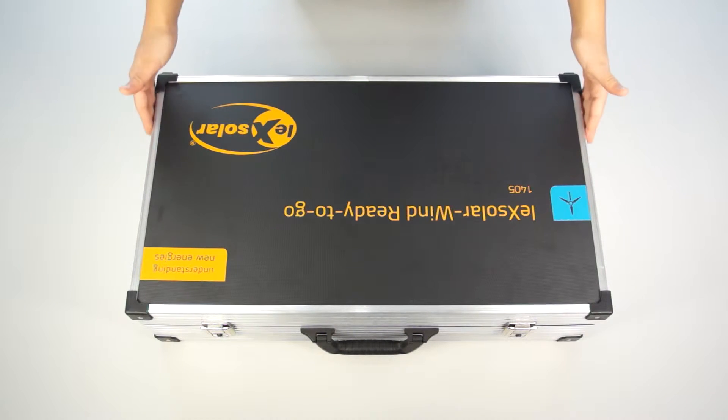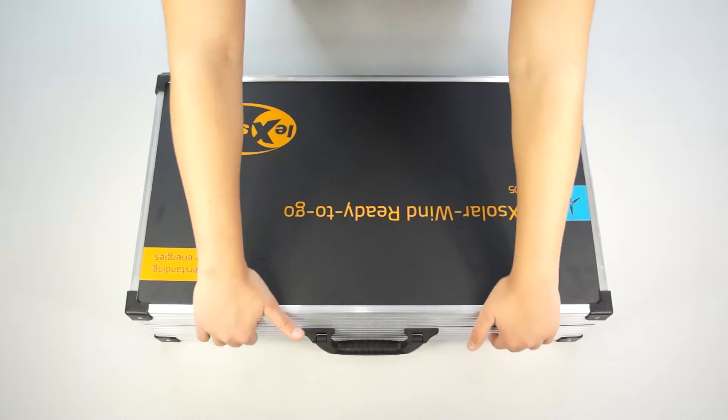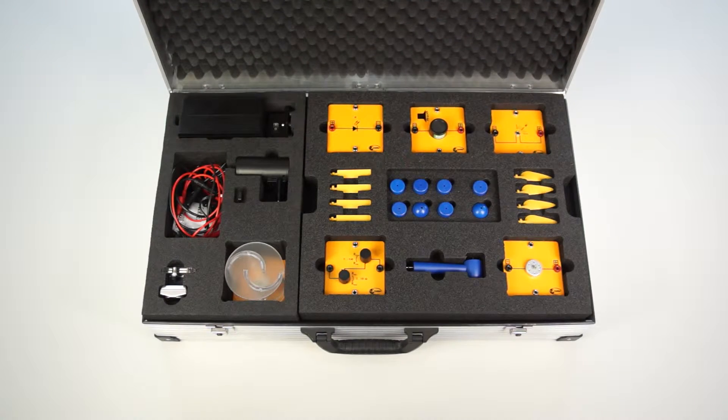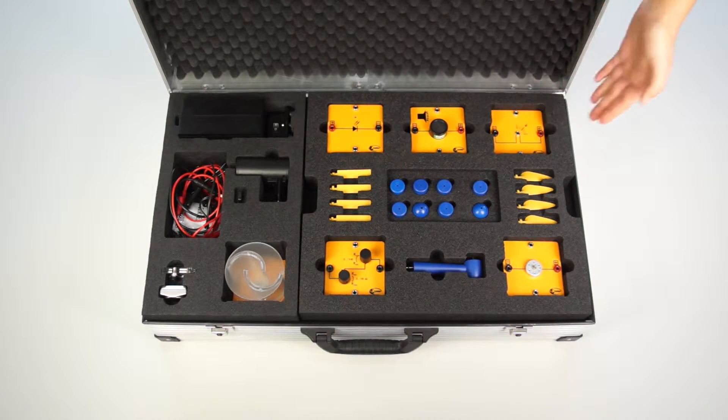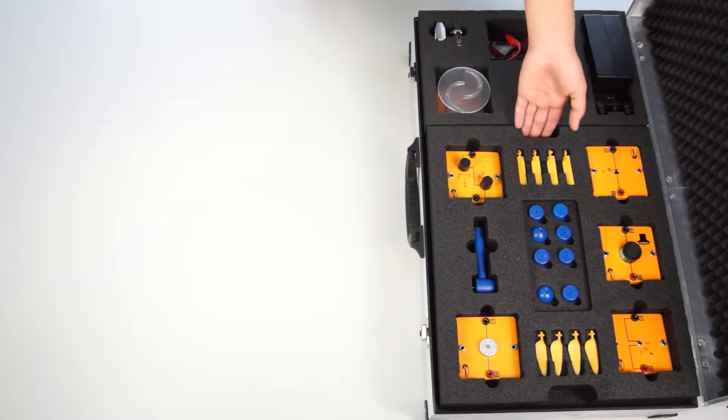This is the LexSolar Wind Ready to Go, our fully equipped experiment system for the basics of wind energy. The system is supplied in a sturdy aluminium case with foam inserts and all necessary accessories such as cables and motors are included.